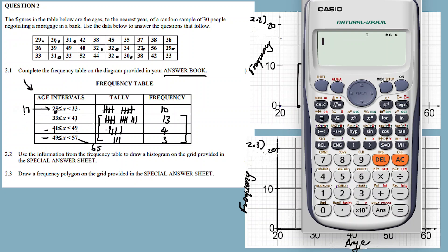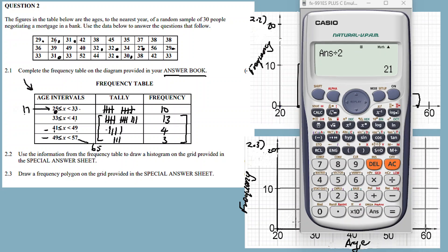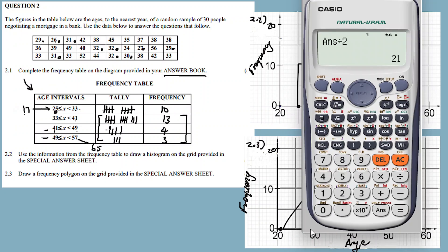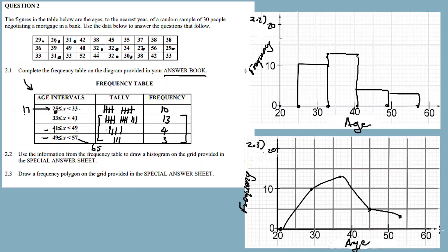So we calculate: the midpoint of 17 and 25 is (17 + 25) / 2 = 21 — that point has frequency 0. And the midpoint of 57 and 65 is (57 + 65) / 2 = 61 — also frequency 0. Then connect all the points. This is your frequency polygon.